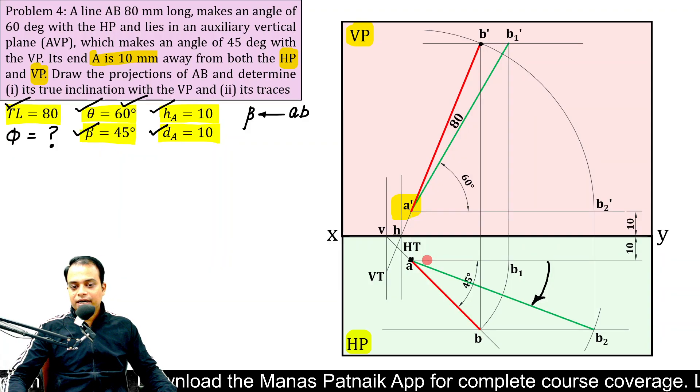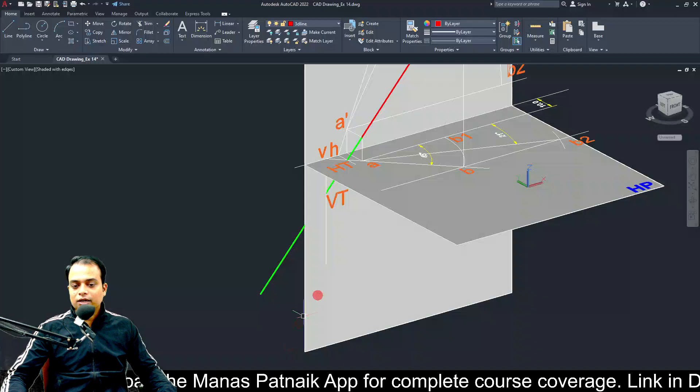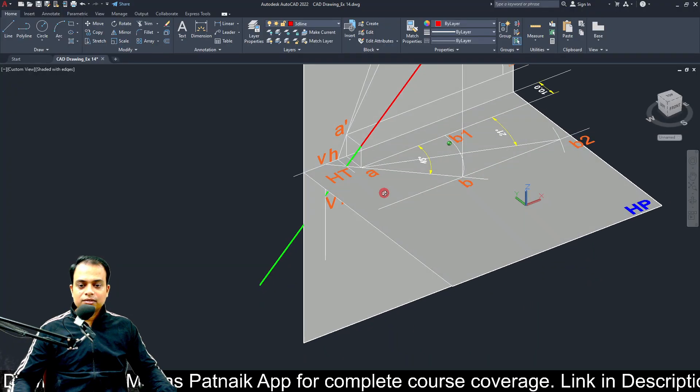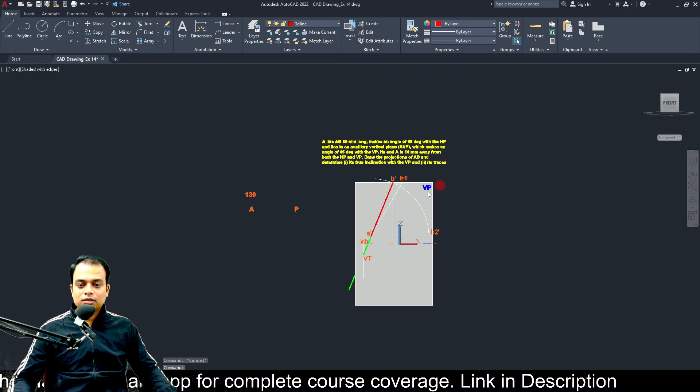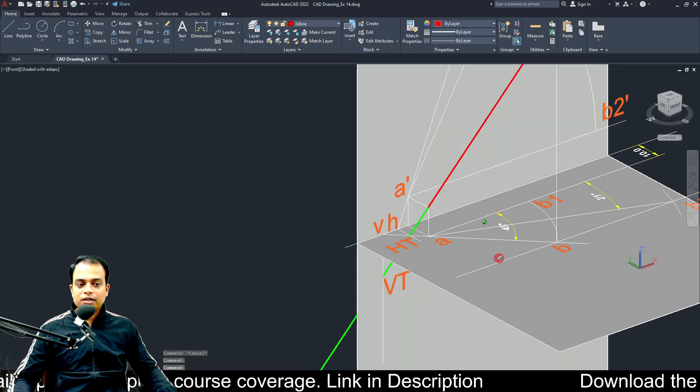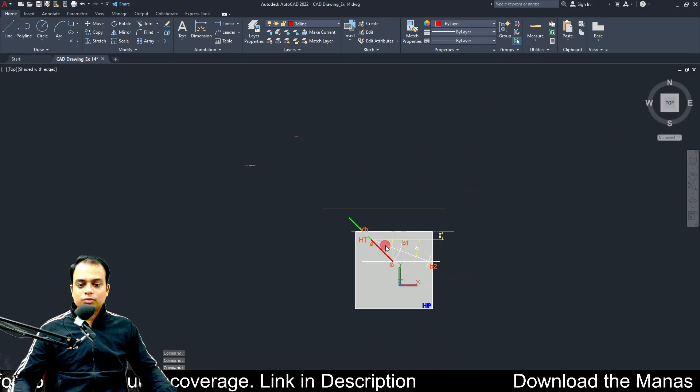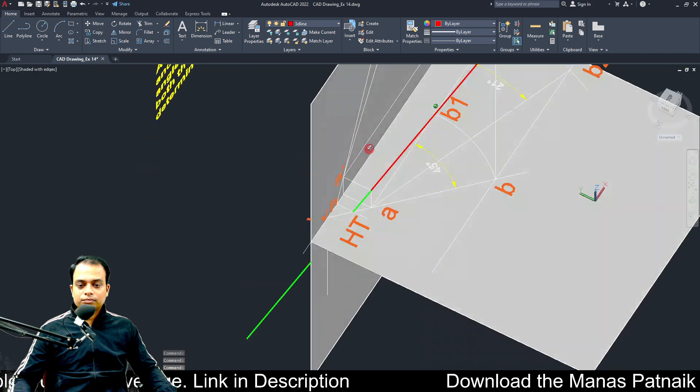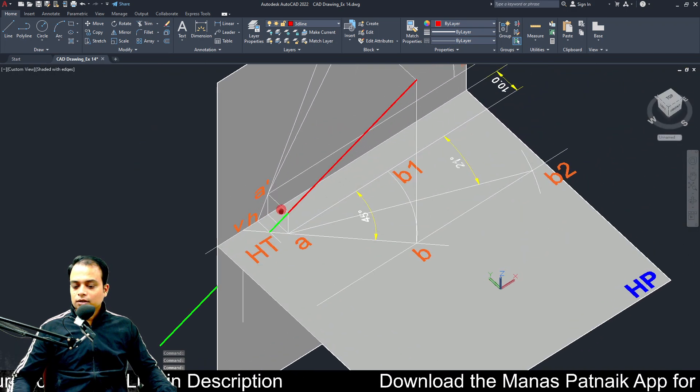That's it. That was the entire description. I think you should take a look at this diagram again. This is how it looks from the front. V and VT. This is 3D. And this is the top view.